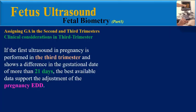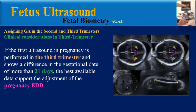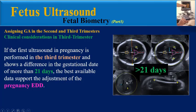If the first ultrasound in pregnancy is performed in the third trimester and shows a difference in the gestational date of more than 21 days, the best available data supports the adjustment of the pregnancy EDD.